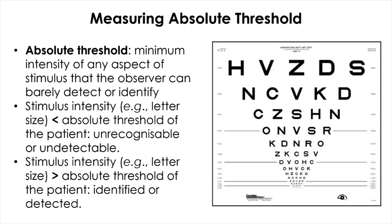In general, an absolute threshold is defined as the minimum intensity, strength, or magnitude of any aspect of a visual stimulus that the observer can just barely detect or identify against the null. If the stimulus intensity is less than the subject's absolute threshold, the stimulus will not be detected or identified — not until the stimulus intensity goes over the subject's threshold. In the subjective refraction example, the stimulus intensity of interest is the size of the letter.